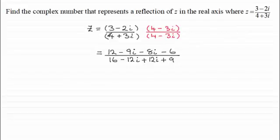And when it comes to the denominator, you get 4 times 4, which is 16. 4 times minus 3i is minus 12i. 3i times 4 is plus 12i. And 3i times minus 3i, that's going to be minus 9i squared. i squared is minus 1, so you end up with plus 9.